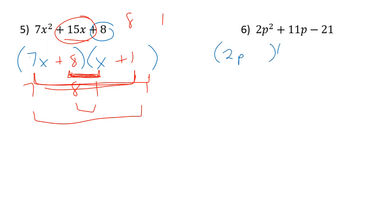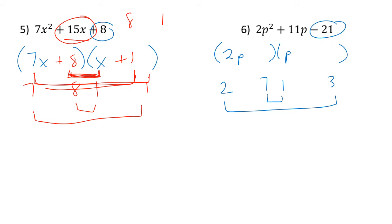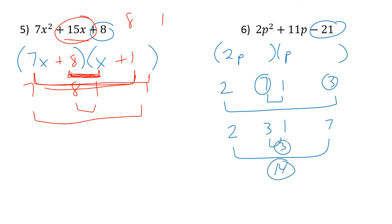Pause anytime you feel like you can work it out — at some point you'll need to practice this. For 2p and p — that's fixed. For 21, use 7 and 3. Check the factors: 6 plus 7 doesn't quite work, so flip the 7 and 3 around. Now I have 14 and 3. With 14 and 3 I can definitely get 11 if 14 is positive and 3 is negative. So I've got my numbers in the right order. I want the 14 to be positive and the 3 to be negative.